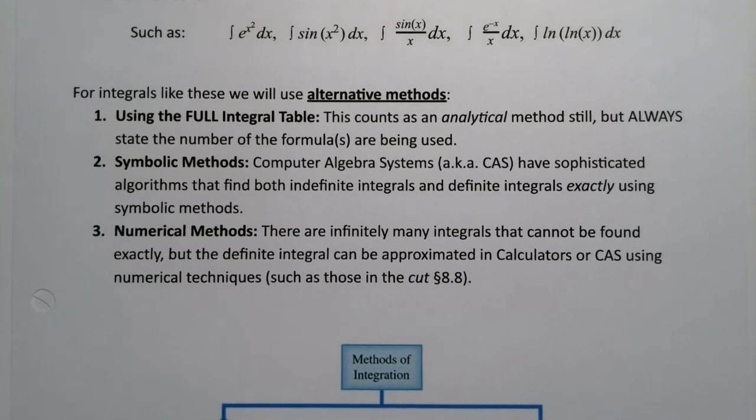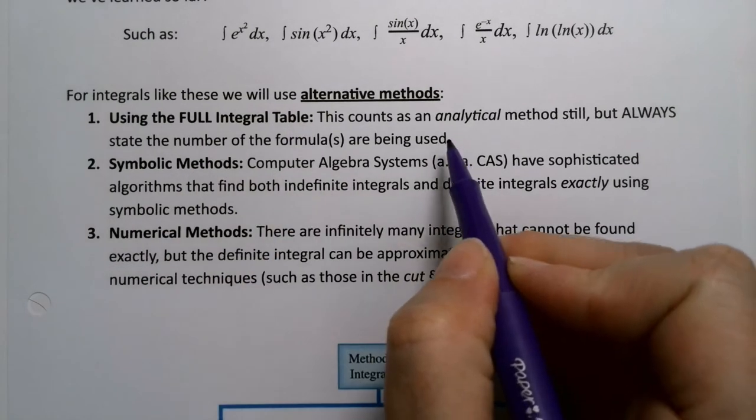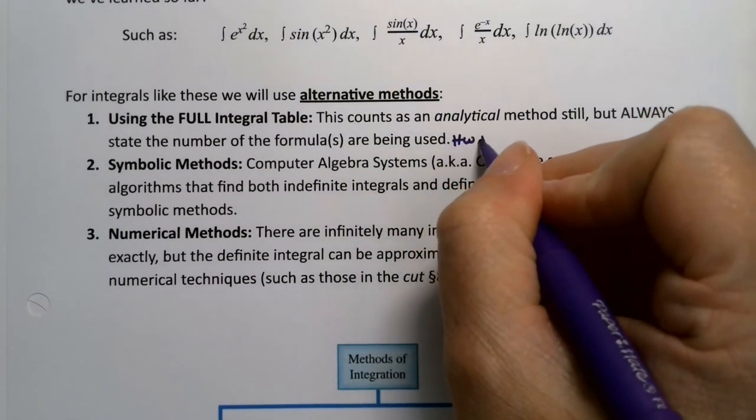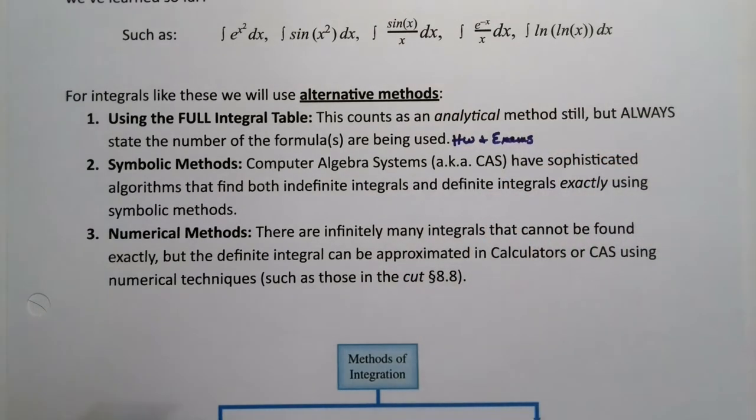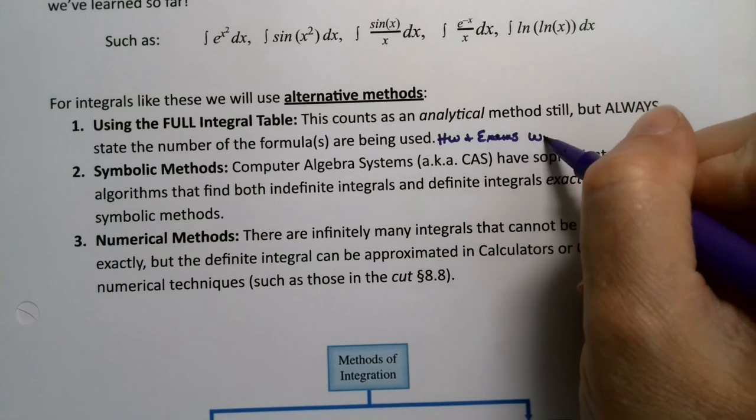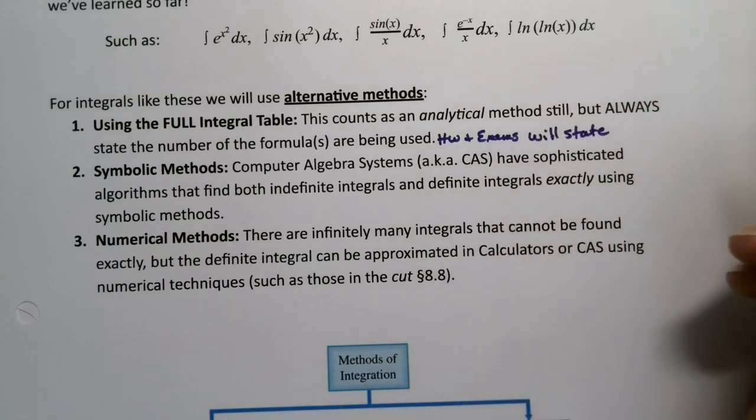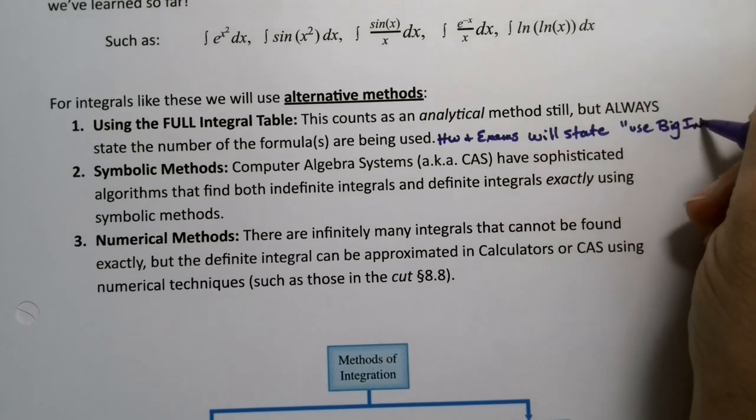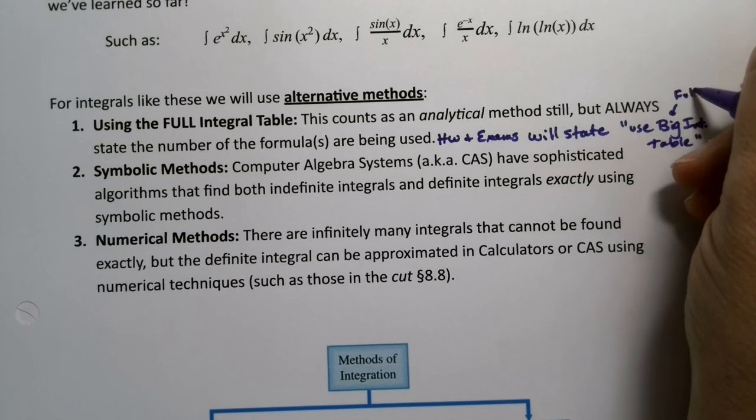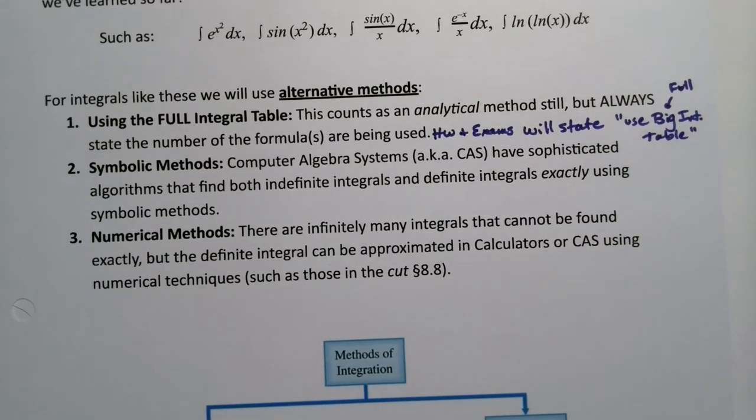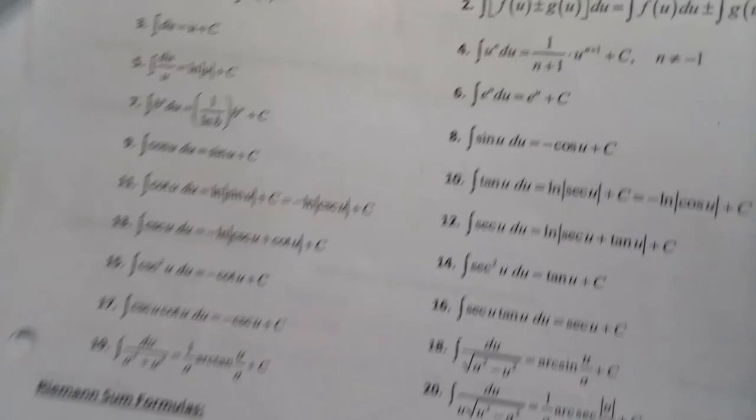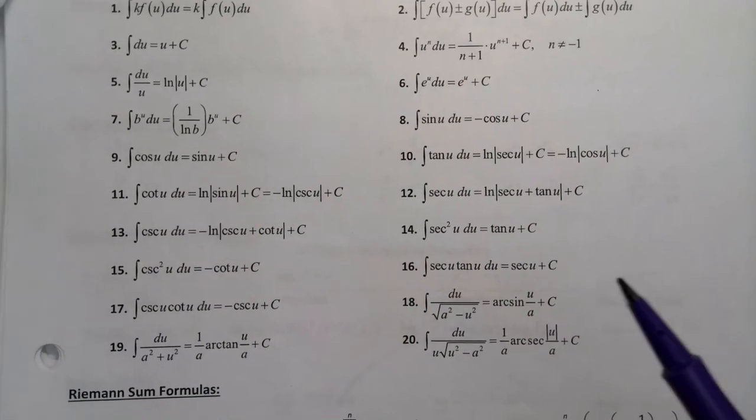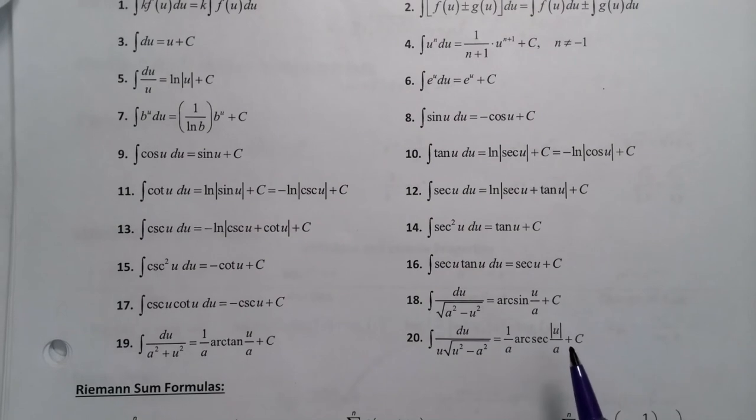So the first thing we need to talk about is the full integral table. I also call it the big integral table. So on homework and exams, it'll be noted when you're allowed to use this one. So they will state, use big integral table. I'll sometimes call it the big integral table, or I'll sometimes call it the full integral table. Now, what am I talking about? Well, remember that we've had this quick integral table, which was the second page of the exam note sheets.